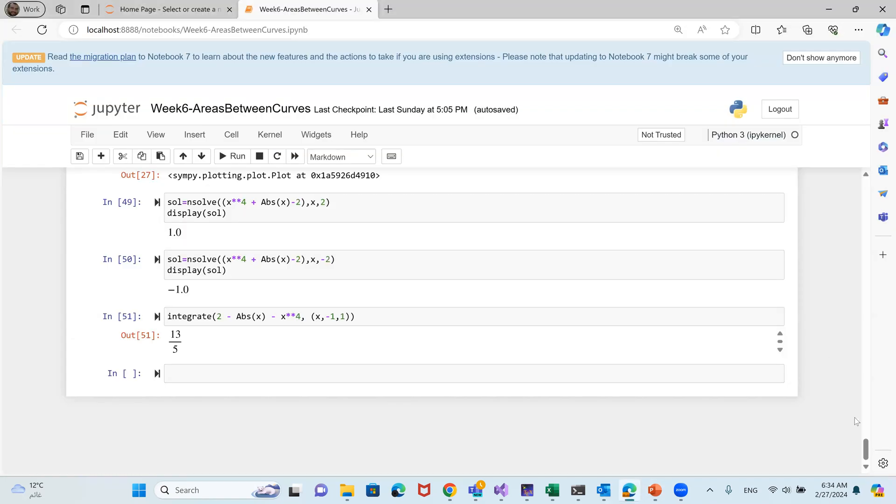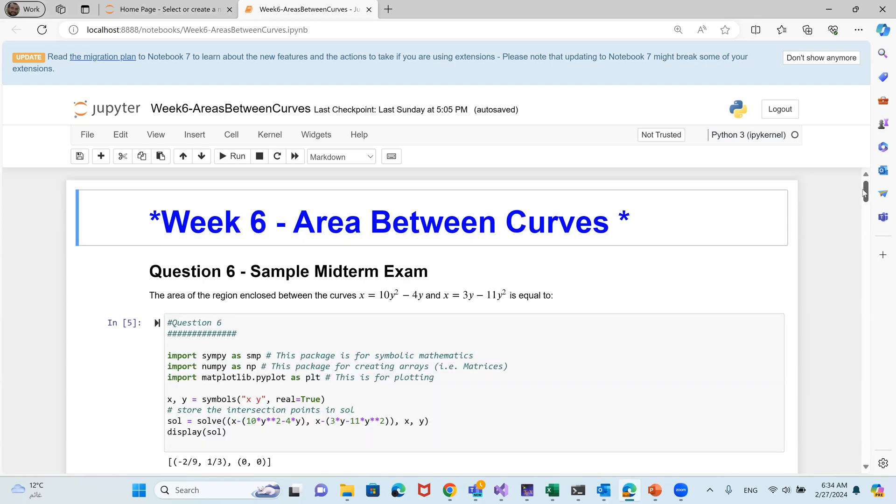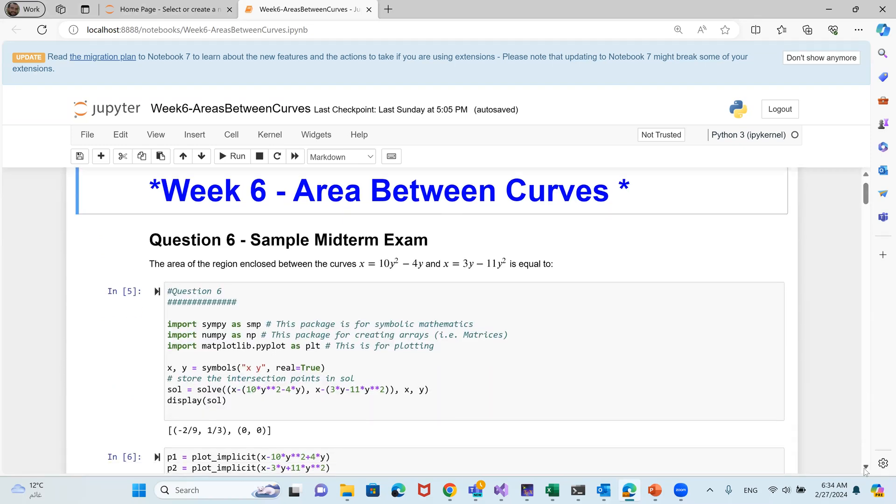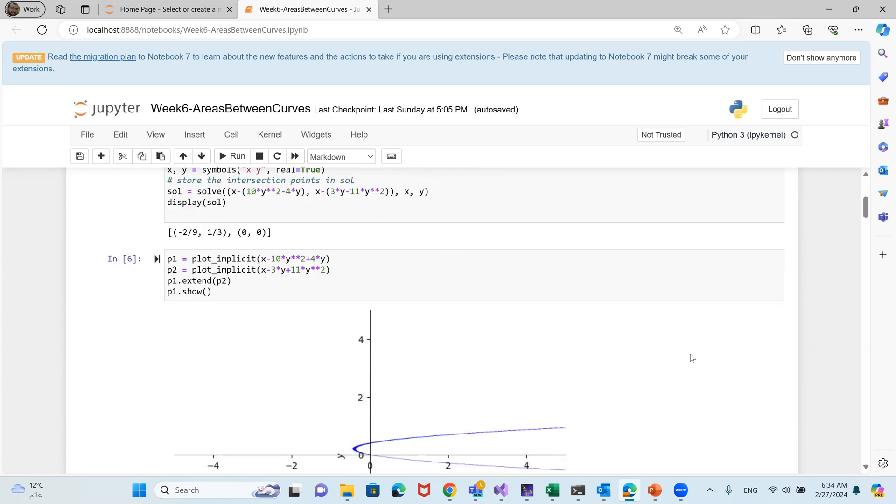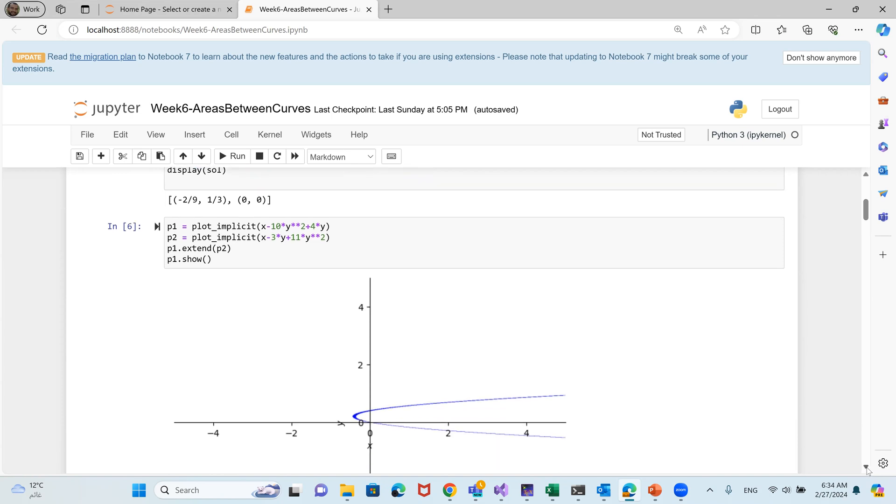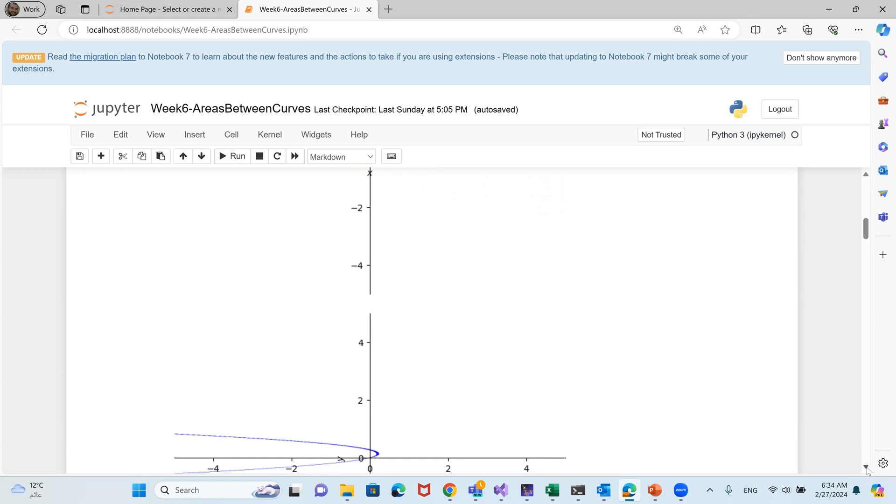If you want to have a look at our Python file, here it is. Here is our sample, of course. And then the next step, as you can see, we will plot the two curves. The first one we call p1, and the second one we call p2. And we will use the plot_implicit function here to plot the two curves. And we will make p2 extend onto the plot of p1. The first one was p1, this is p2, and then this is p1 on the top of p2. We're mainly talking about this region between the two curves.